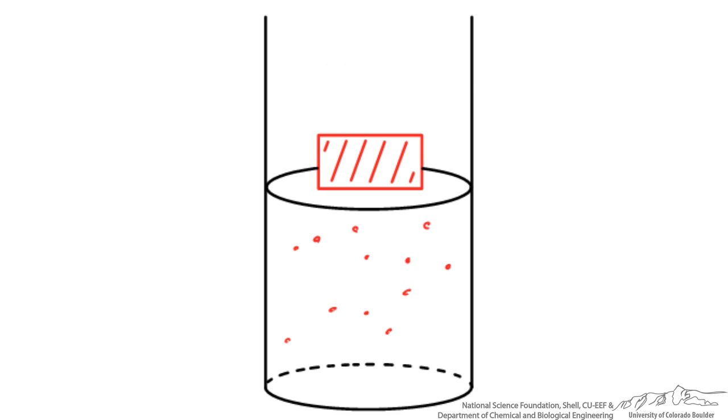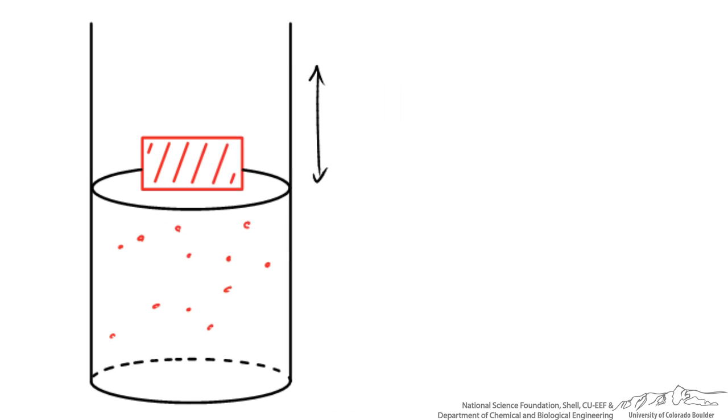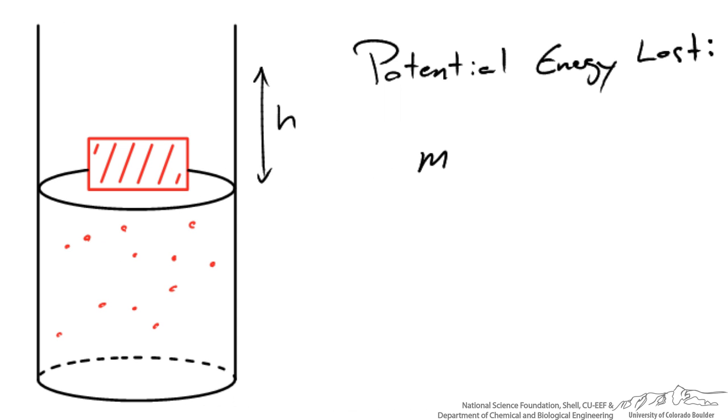So here the brick is at its lower equilibrium position, and my rhetorical question for you is where did the potential energy of that brick go? It dropped down a certain distance. The potential energy lost by the brick is equal to the mass of the brick times g times the height that it fell.